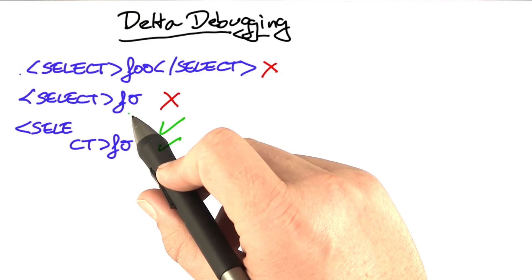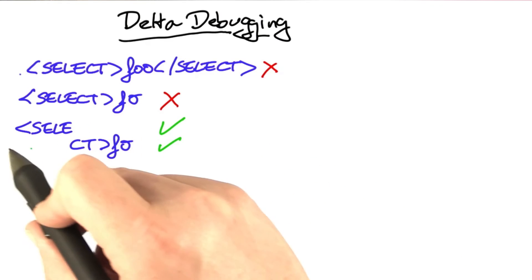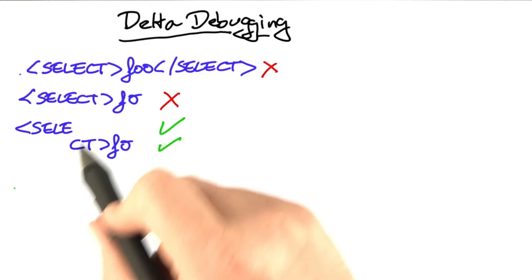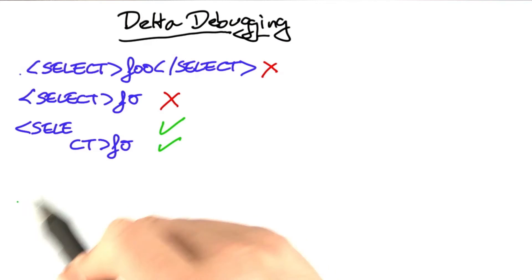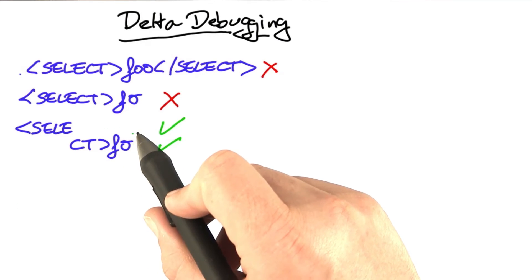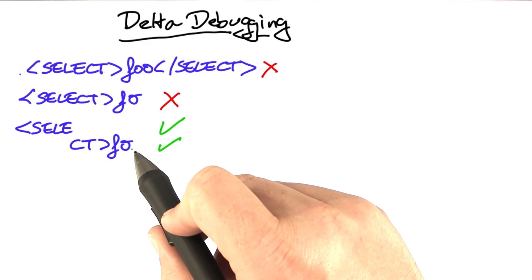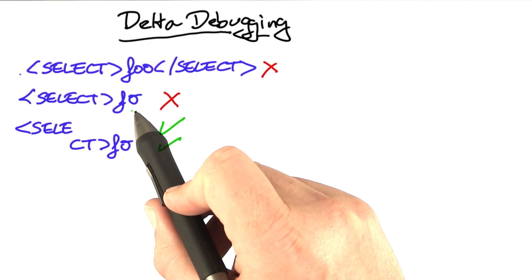but what a computer can do still is to try to remove smaller chunks. That is, rather than trying to remove entire halves, we would try to remove, say, quarters or eighths of the input until we're down to removing single characters.